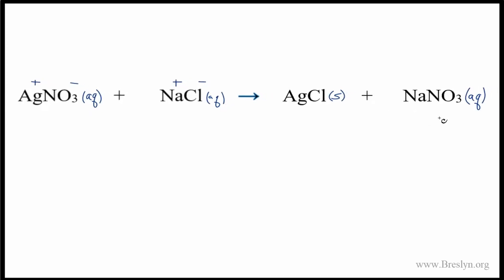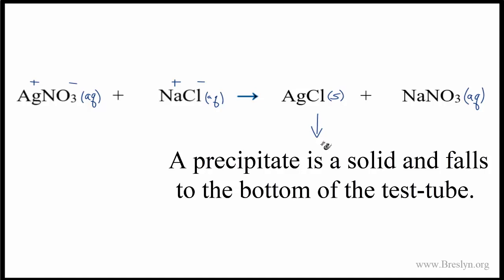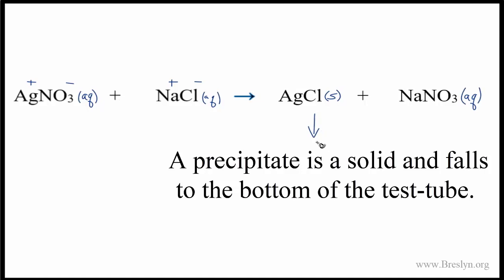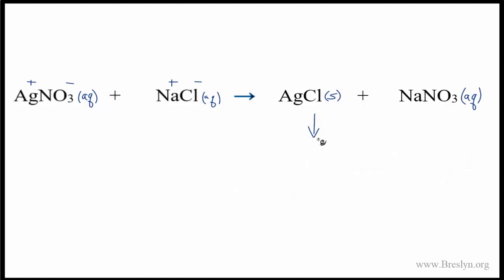If you think about this reaction, the sodium nitrate is aqueous so it should stay dissolved, but the solid AgCl should fall to the bottom of the test tube as a precipitate. That's important when writing net ionic equations.